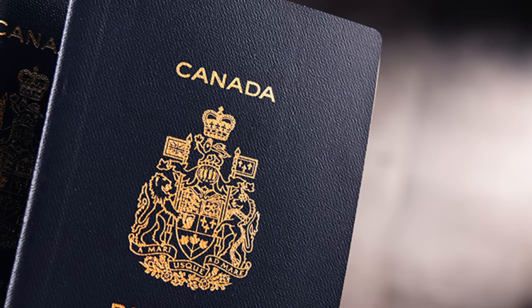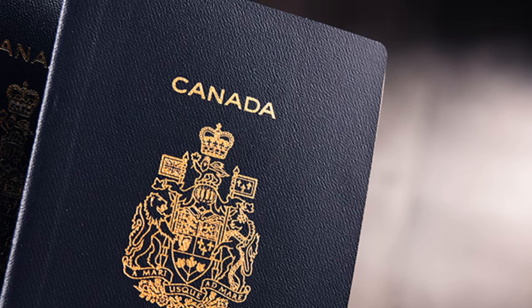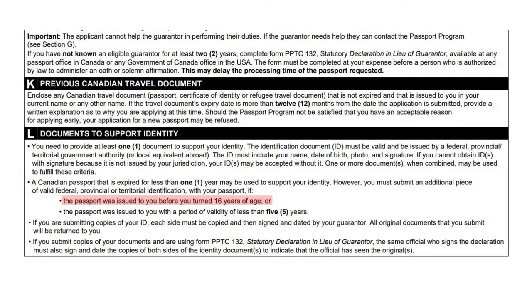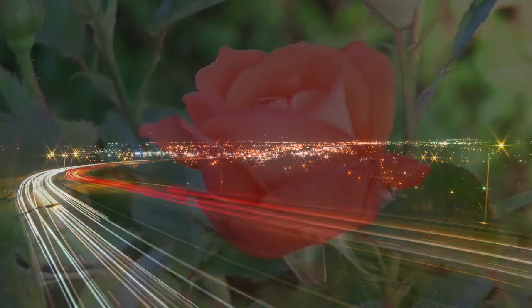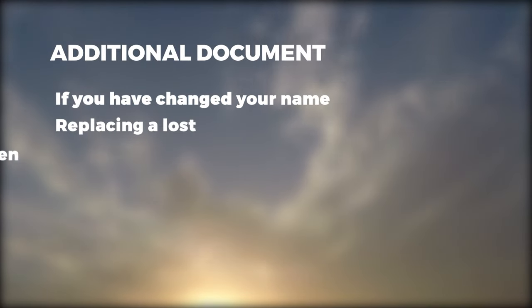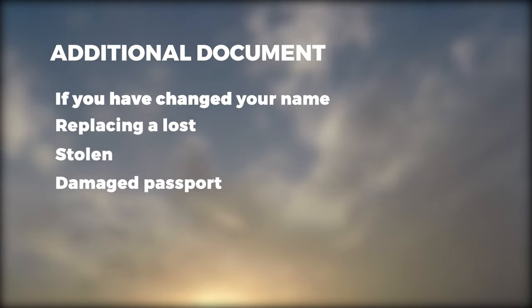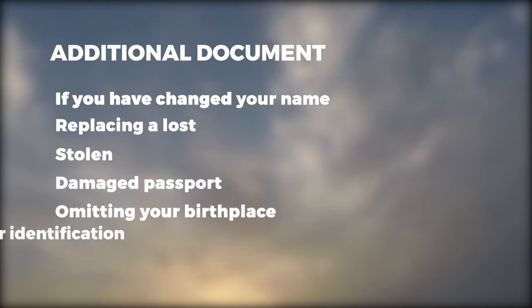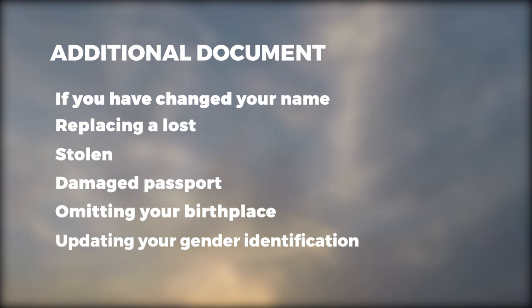If your passport was issued to you before you turned 16, you need to submit another ID with it — this ID can be without a photo. You cannot use your passport as an ID if it has been expired for more than a year or reported as lost or stolen. If you have changed your name, or are replacing a lost, stolen, or damaged passport, or omitting your birthplace, or updating your gender identification, in any case you need to provide additional documents.